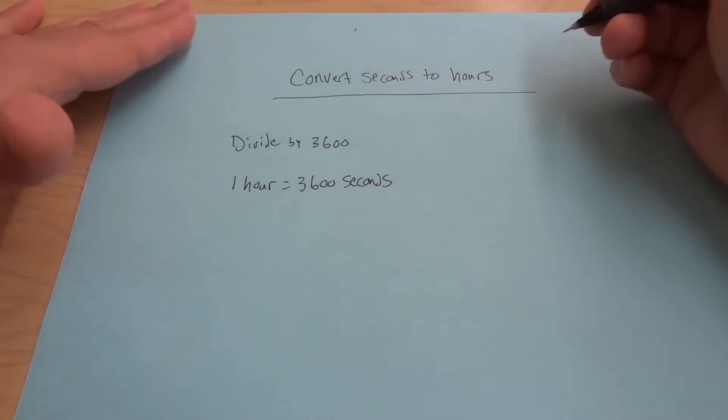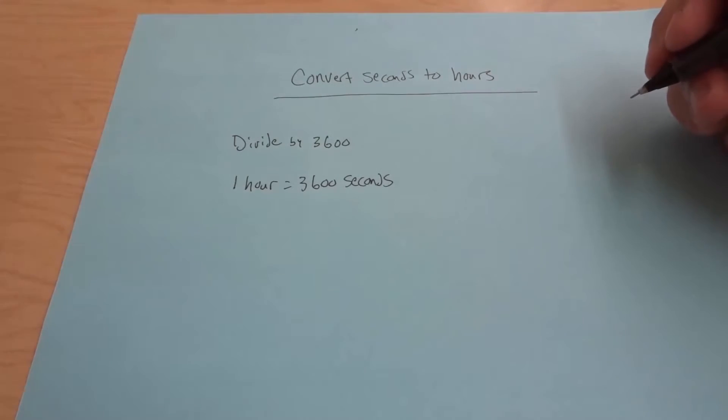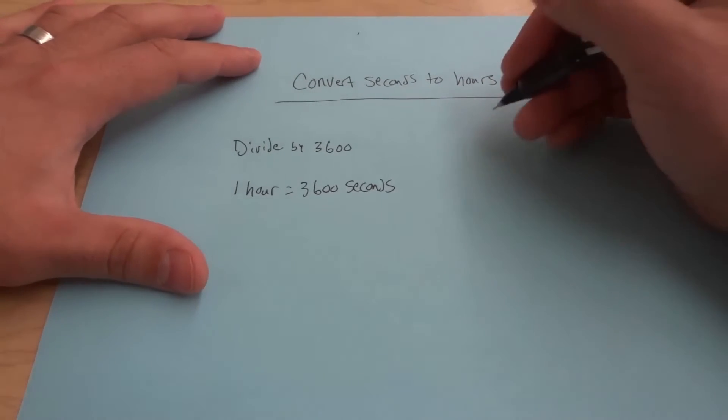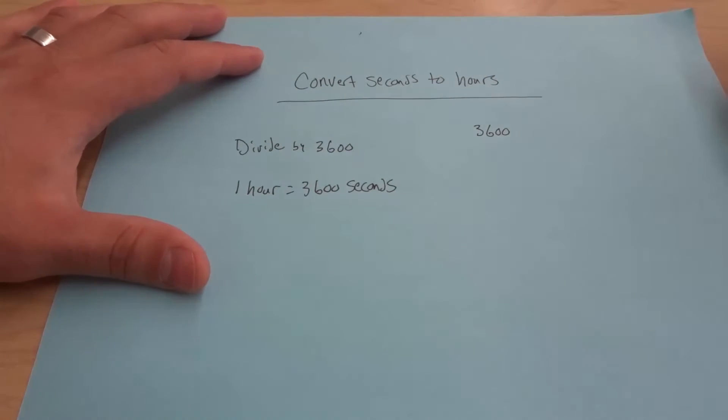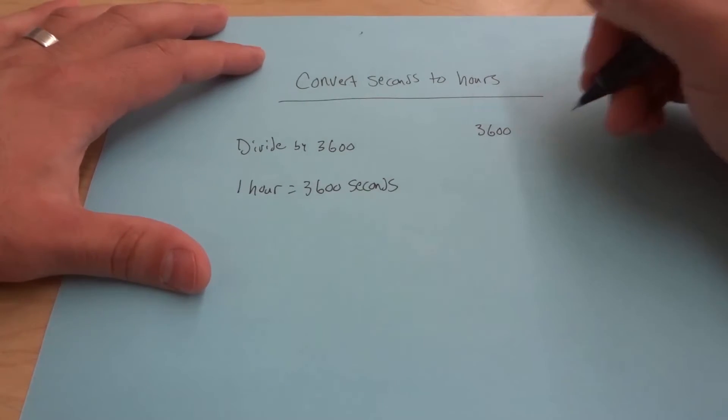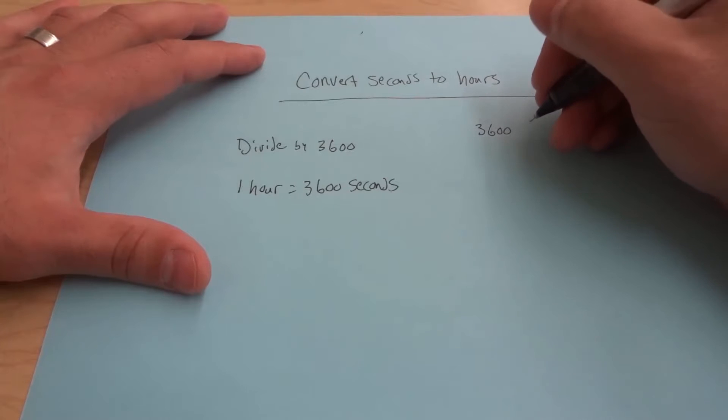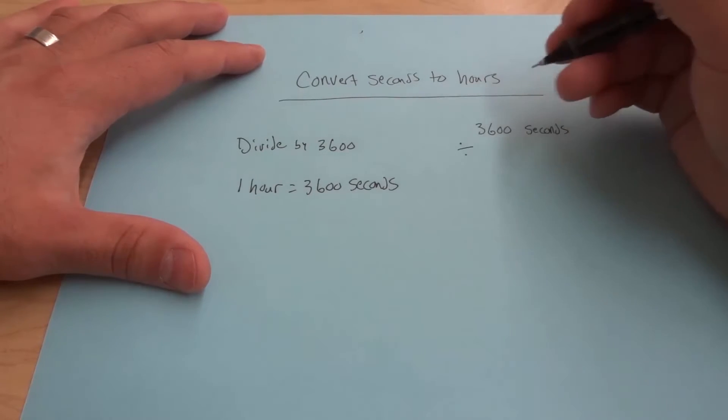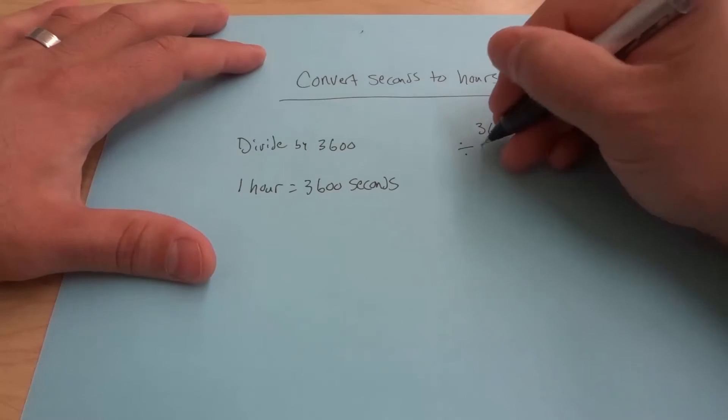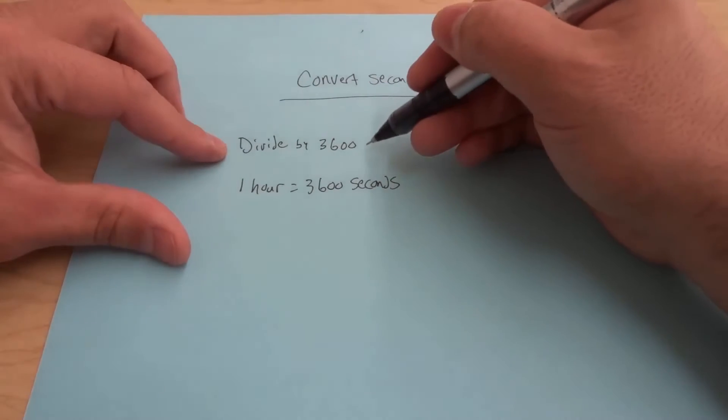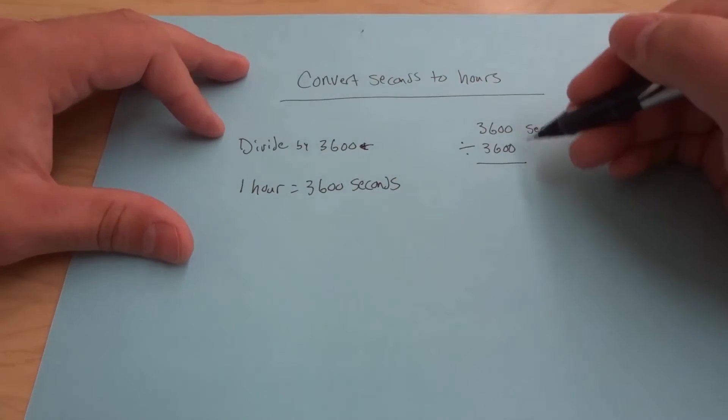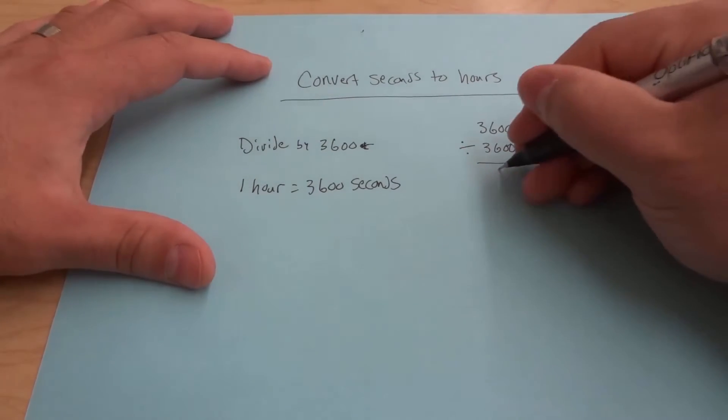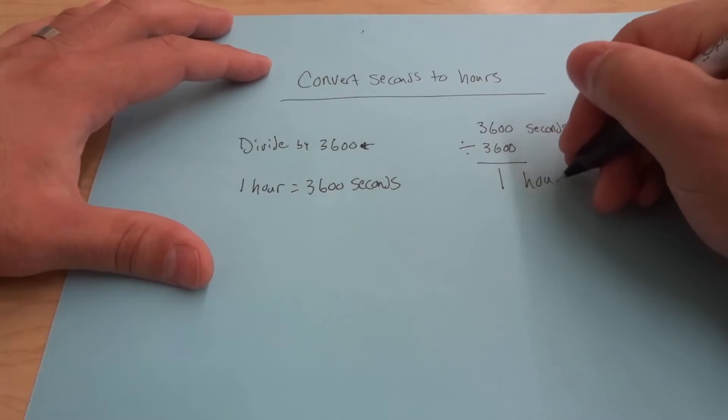So let's say I had, just for a simple example and then we'll go over some more complex ones. Let's say that I had 3,600 seconds. All that I would have to do to convert it to hours is I would take the 3,600 seconds and then I would divide it by 3,600 because that's the step right over there. And then if I divide 3,600 by 3,600, I get one. So that would be one hour.